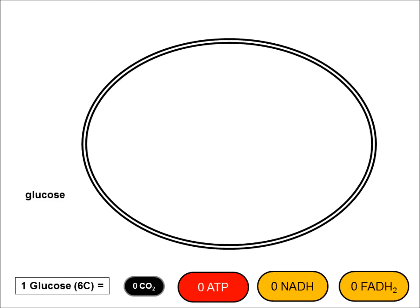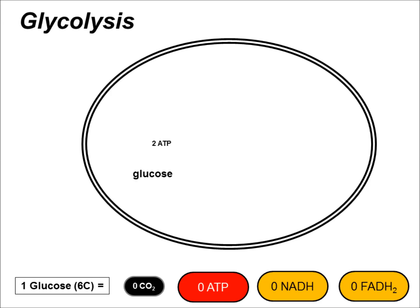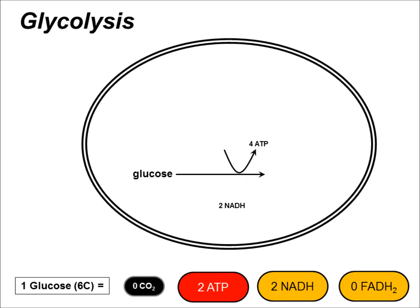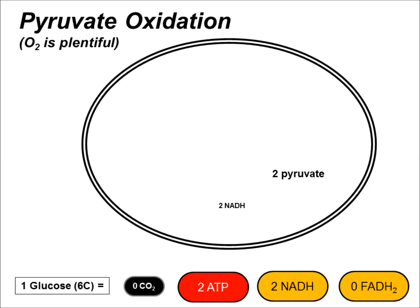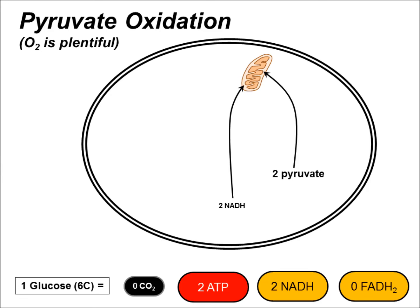Glucose is taken into the cell from an external environment and put through the process of glycolysis in the cytoplasm. Glycolysis is a multi-step process in which glucose is converted into pyruvate. A small amount of ATP is produced along the way, as is a little bit of NADH. Depending on the cell's environment, pyruvate can either undergo fermentation when oxygen is limiting — becoming lactic acid or lactate as a waste product — or, if oxygen is plentiful, the pyruvate can instead be shuttled into the mitochondrion where it can undergo oxidative metabolic processes.